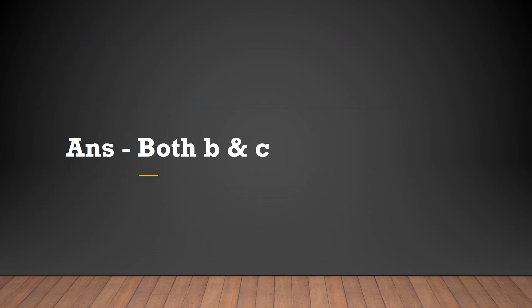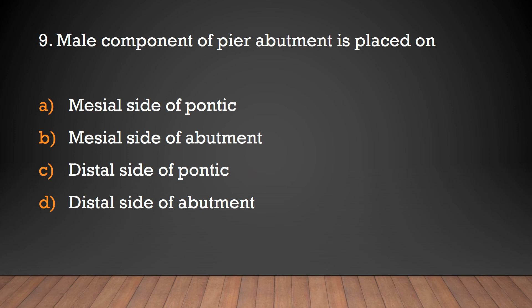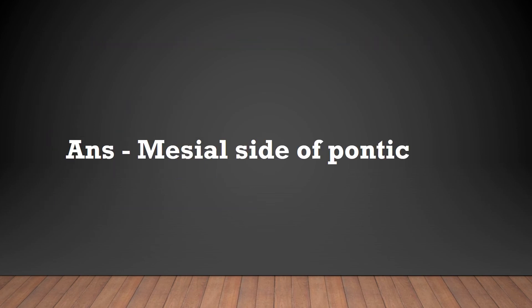The male component of a pier abutment is placed on: mesial side of pontic, mesial side of abutment, distal side of abutment, or distal side of abutment? The answer is mesial side of pontic. The male component of a pier abutment is placed on the mesial side of the pontic.